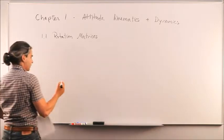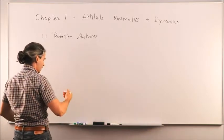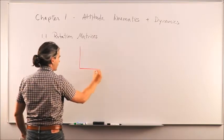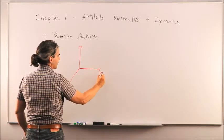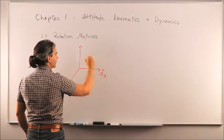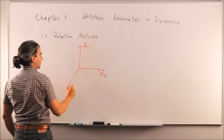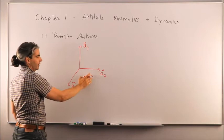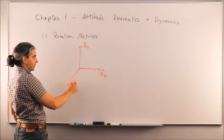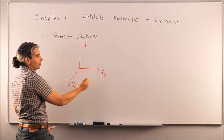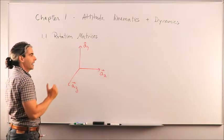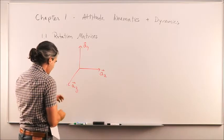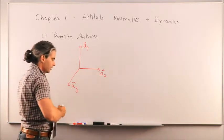Let's consider two generic reference frames. I'll call the first one reference frame A, with its X unit vector to my right, its Y unit vector up, and its Z unit vector normal to the plane of the board — pointing at you. The direction of AZ is determined by the right-hand rule: the cross product of AX with AY gives the direction of AZ, which is out of the board.